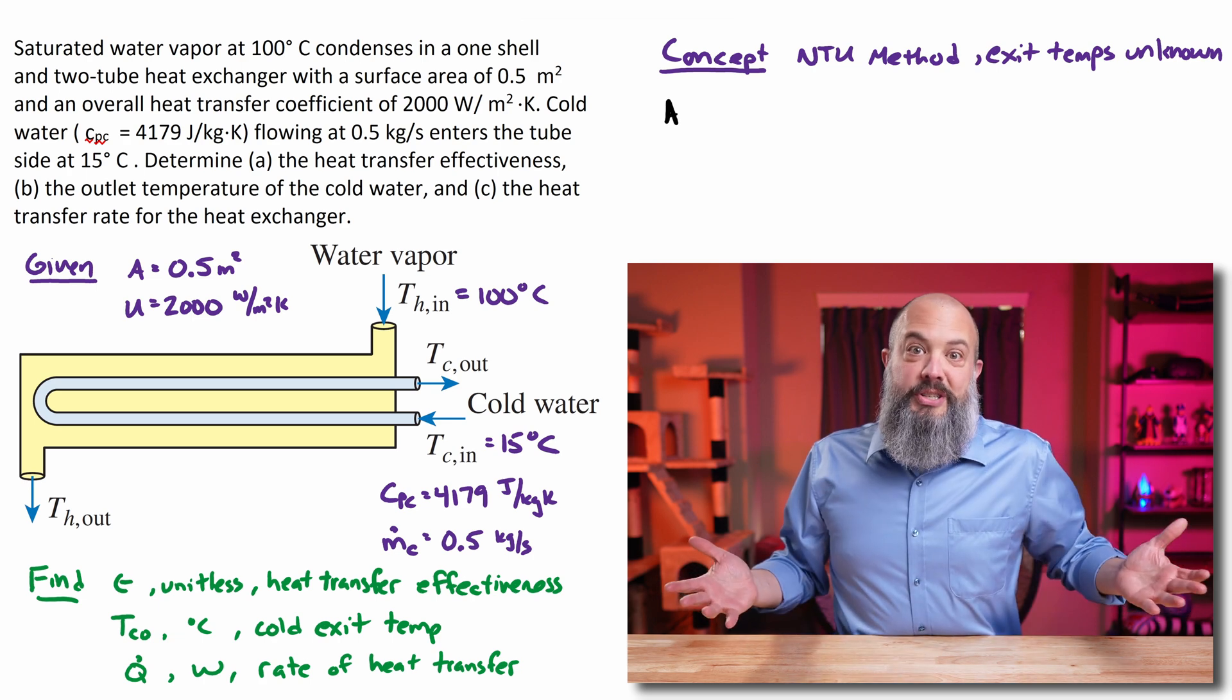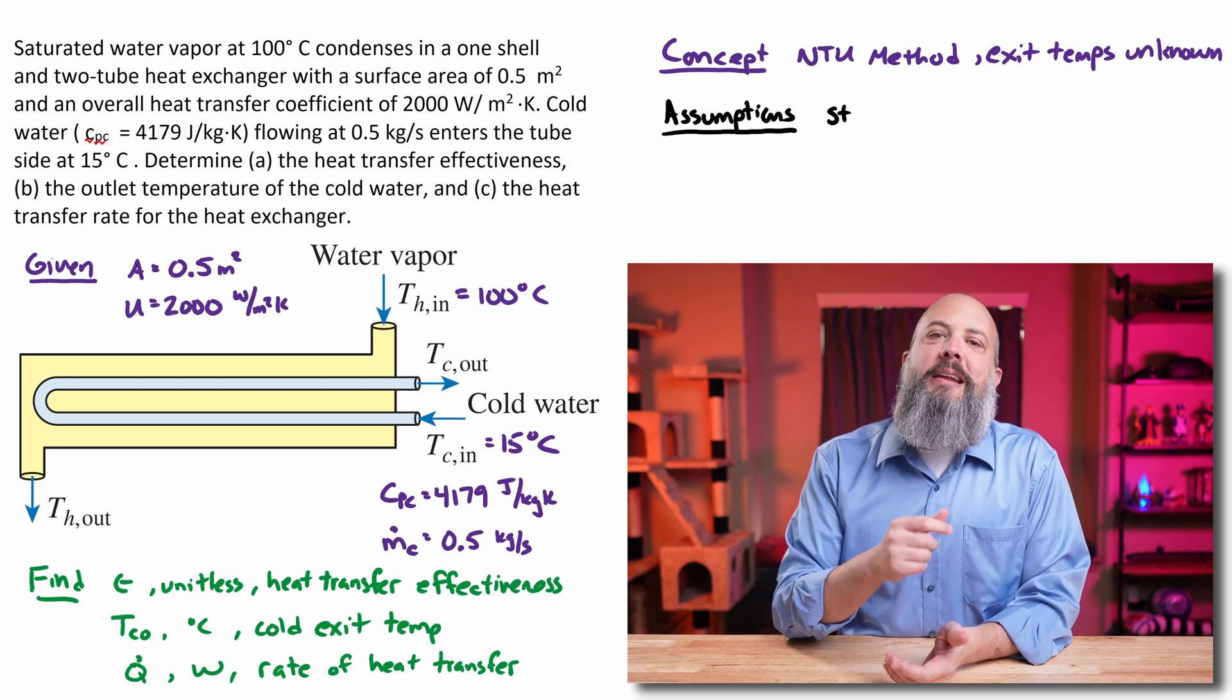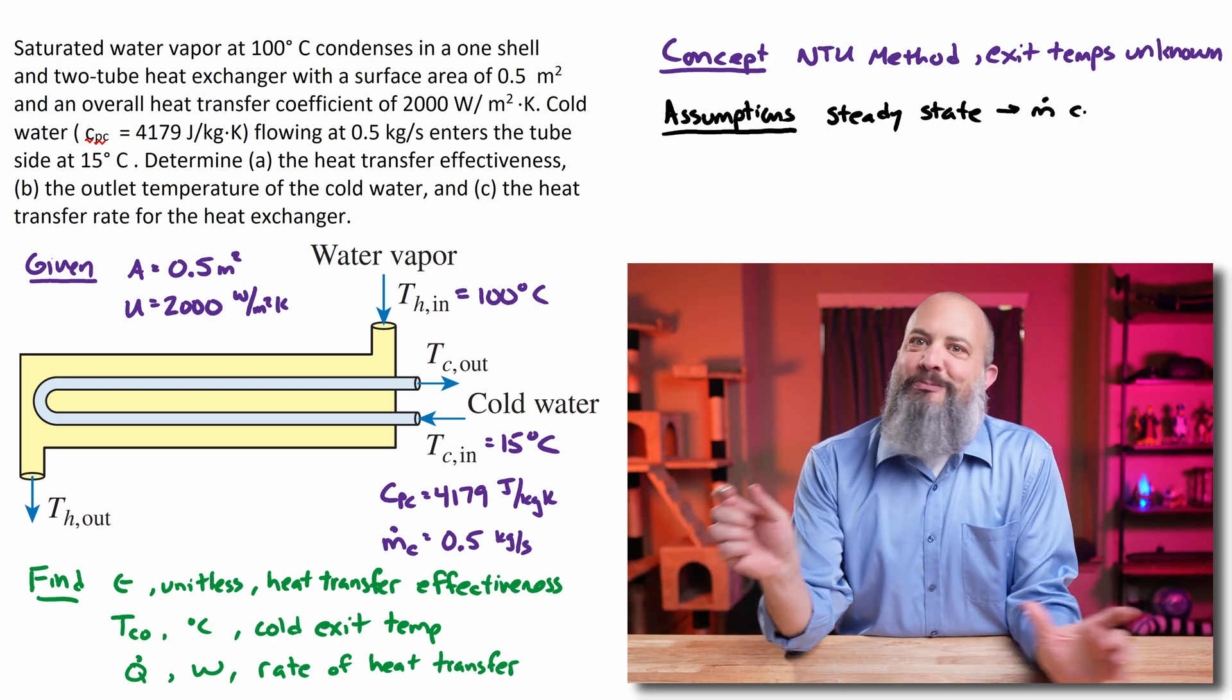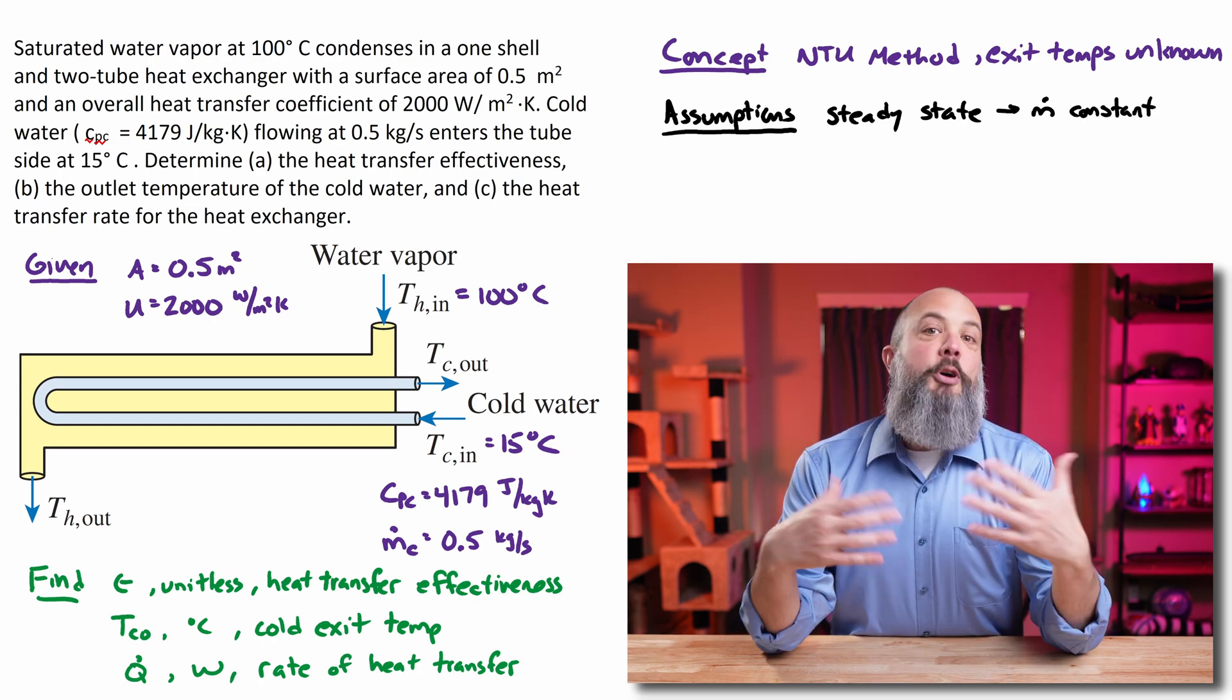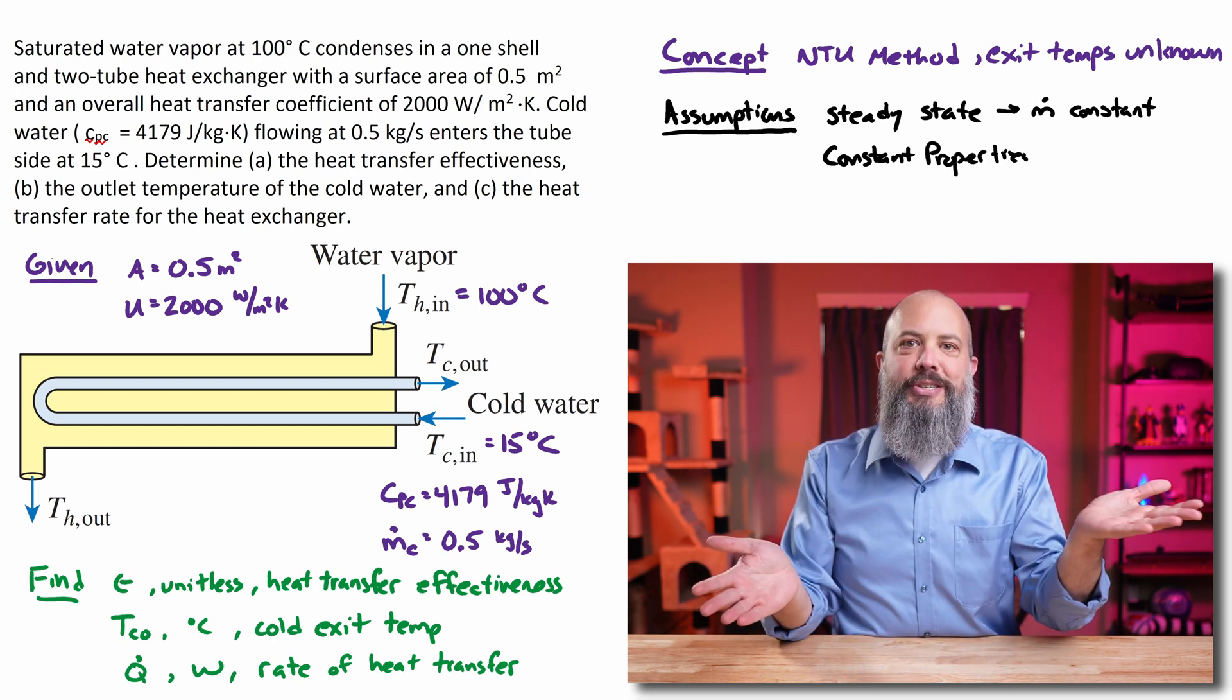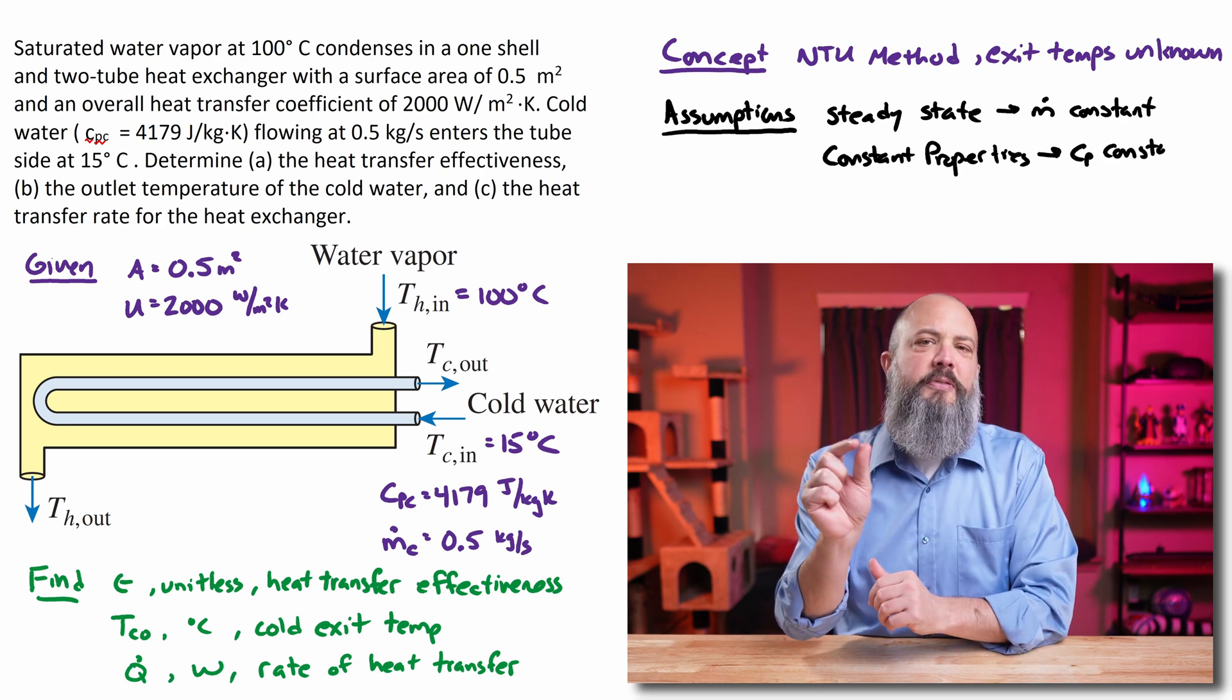Normally for assumptions, I write them down as I go through the problem. I'm going to assume steady state operations so that the mass flow rate doesn't change. And I'm also going to assume constant properties, so CP is constant. Technically, specific heat changes as temperature changes, but I'm just going to use one value for that.